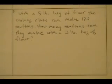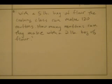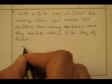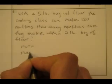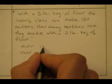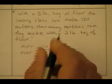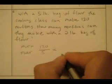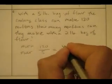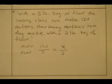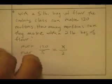And there are some word problems. With a five-pound bag of flour, the cooking class can make one hundred twenty muffins. How many muffins can they make with a two-pound bag of flour? They have a muffin-to-flour ratio. The muffin-to-flour ratio will stay constant, so we can set up a proportion.